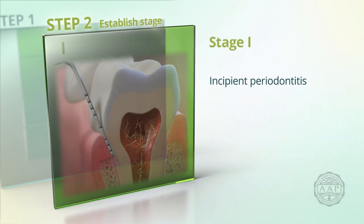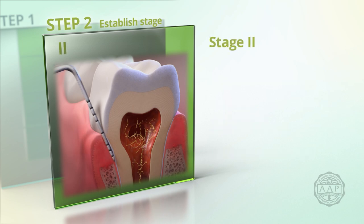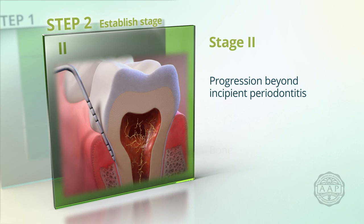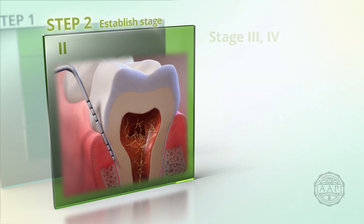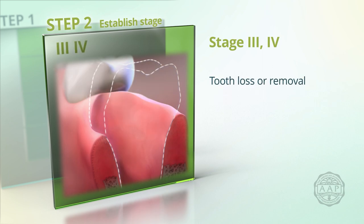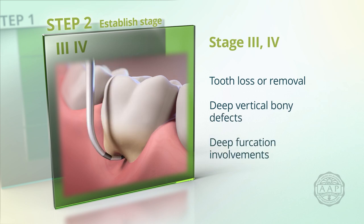Stage 1 is incipient periodontitis with bone loss within the coronal 15% of the root and probing depths equal to or less than 4 mm. Stage 2 represents progression beyond incipient periodontitis and exhibits bone loss within 15 to 33% of the root and probing depths equal to or less than 5 mm. If teeth were lost or planned to be removed due to periodontitis, or if deep vertical bony defects or deep furcation involvements are present, the patient has either stage 3 or 4 periodontitis.